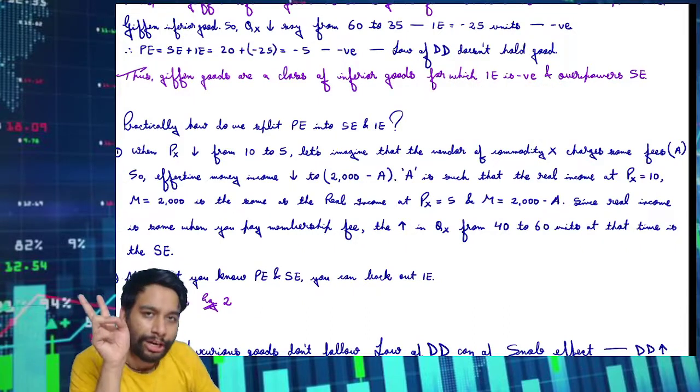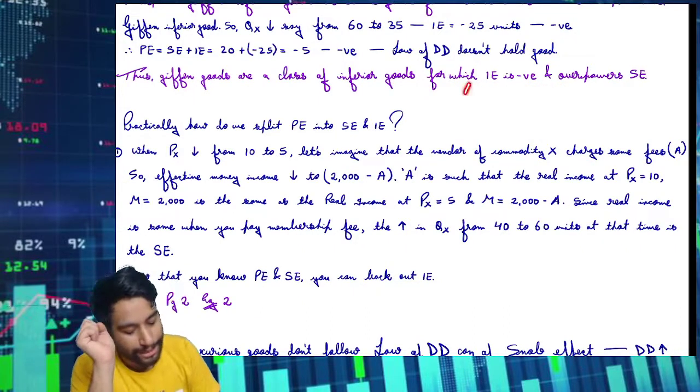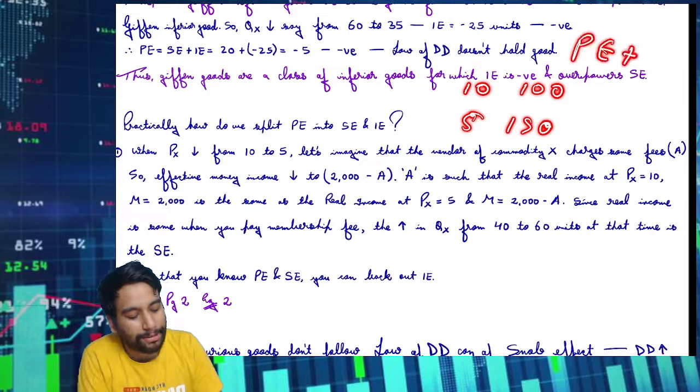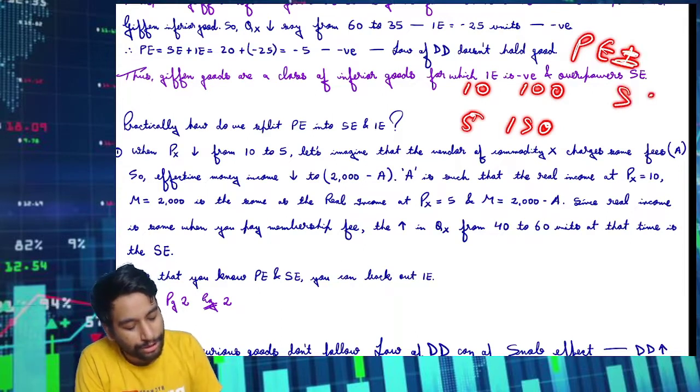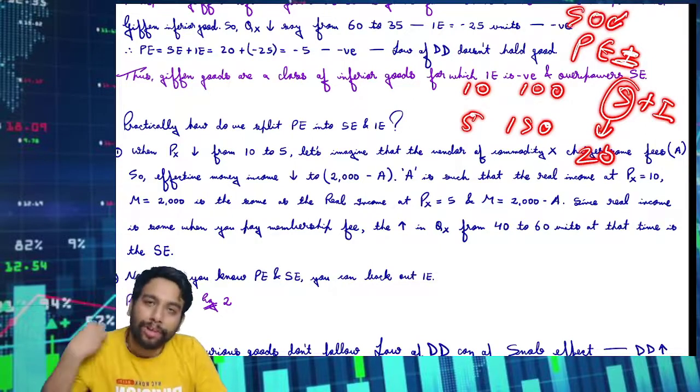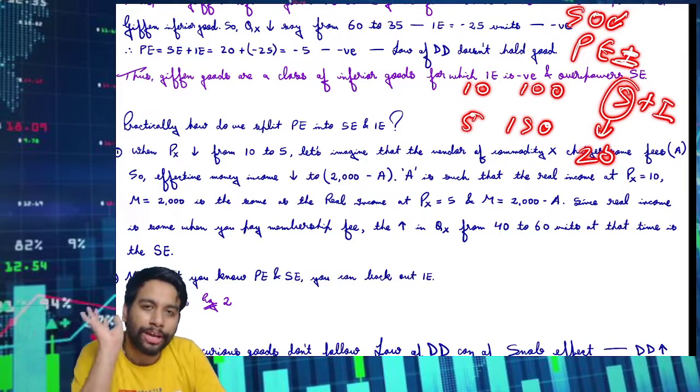Now question: when price changes from 10 to 5, you go from 100 to 150 quantity. So 50 is the price effect, and price effect means what? Substitution plus income effect. Substitution is 20, and price effect is total of 50 quantity.